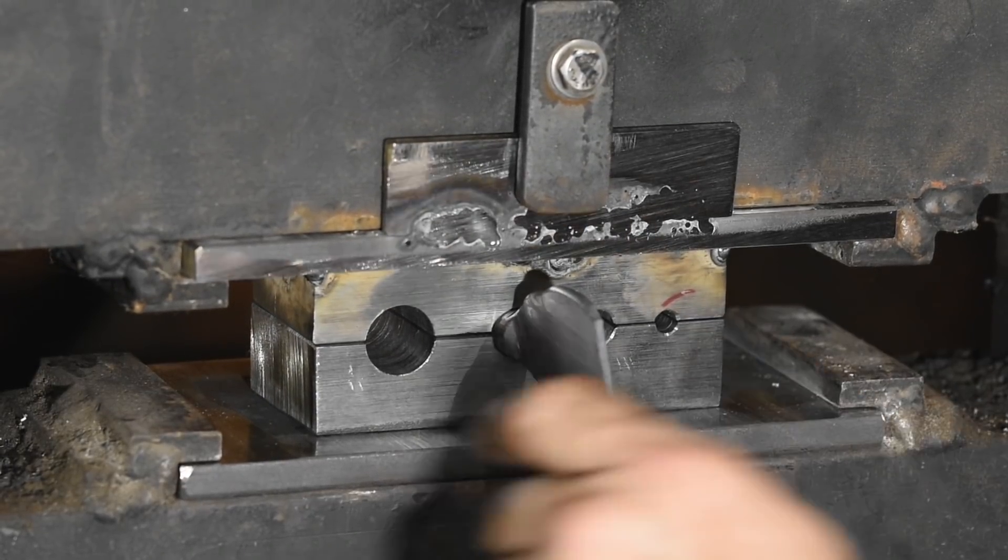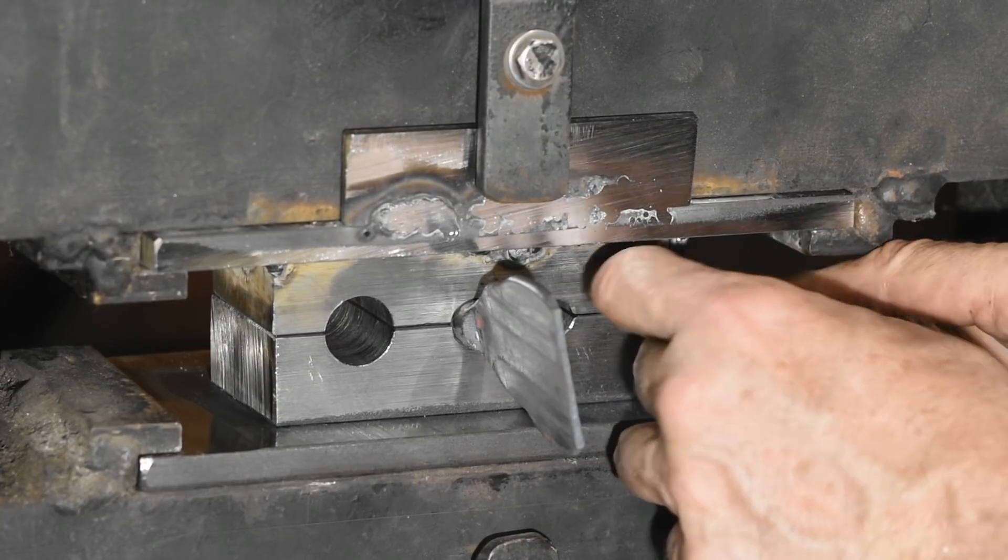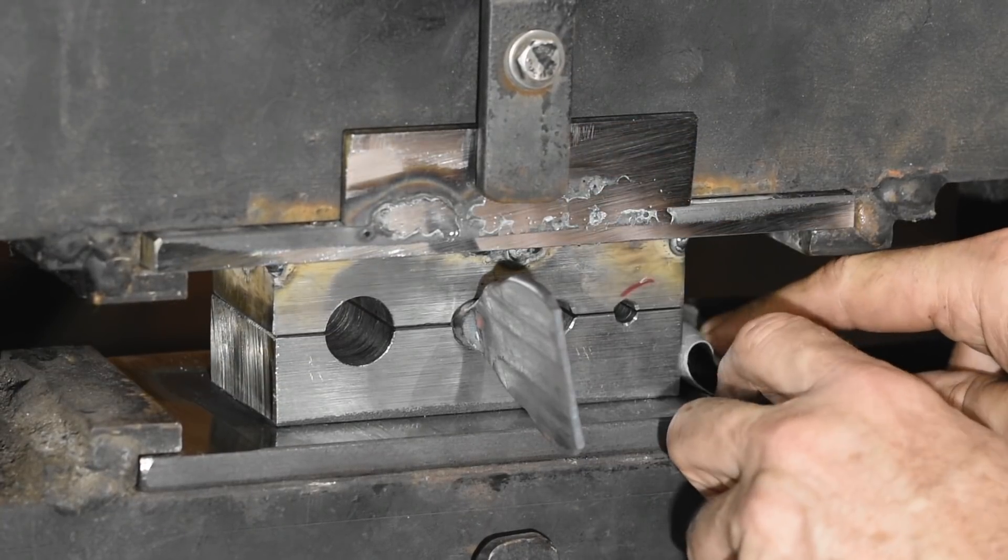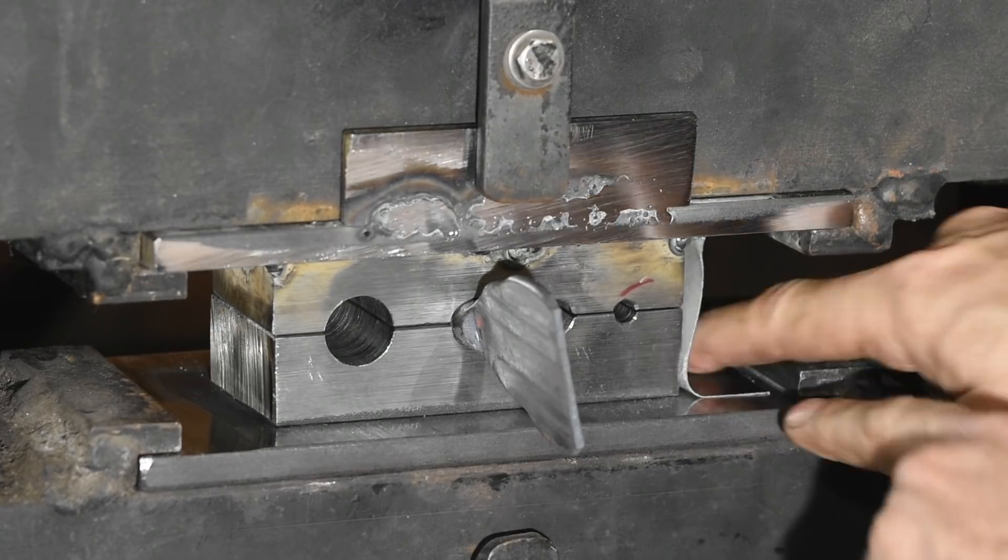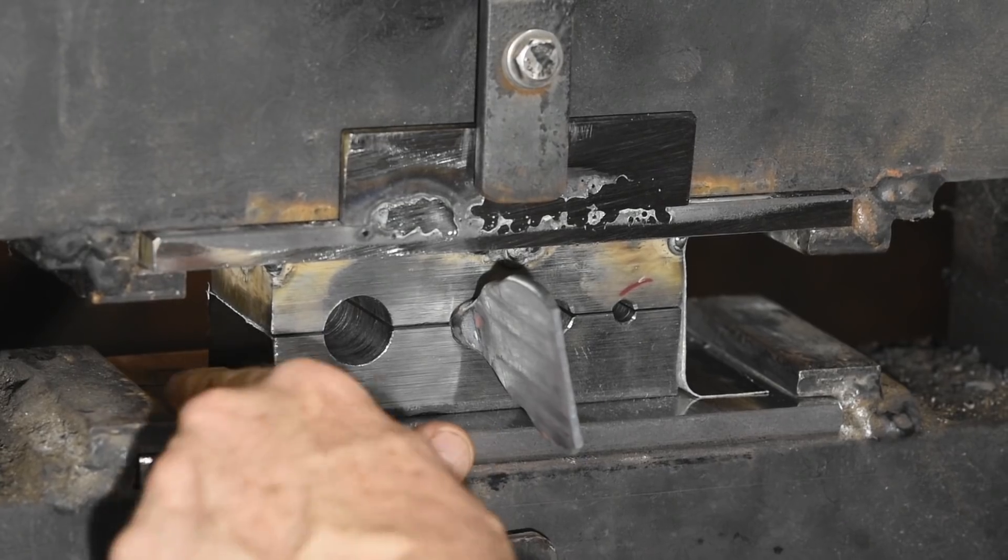After that, I'll use Gorilla Tape to keep it in position. Then I'll take it back to the welding table, tack it, take it back to the press, and give it a test run to make sure everything's right, and only then will I finalize the welds.